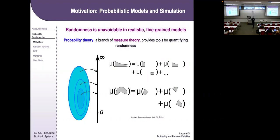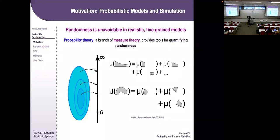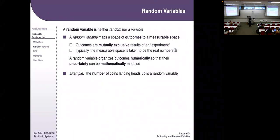Integration comes from measure theory — when you integrate under a curve, you're effectively assigning a number to a set. That's why integration is used so much in probability theory. Probability theory is a subset of measure theory, so when we talk about probability, we often use the language of measure theory.